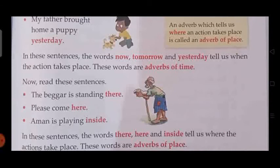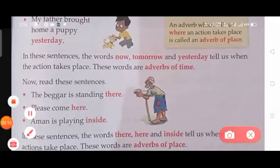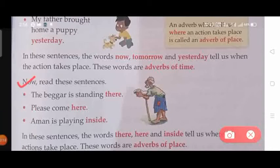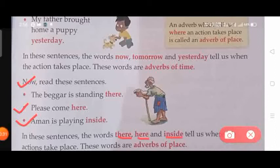The next type of adverb is adverbs of place. Read these sentences: 'The beggar is standing there.' 'Please come here.' 'Amal is playing inside.' In these sentences, the words 'there', 'here', and 'inside' tell us where the actions take place. These words are adverbs of place.